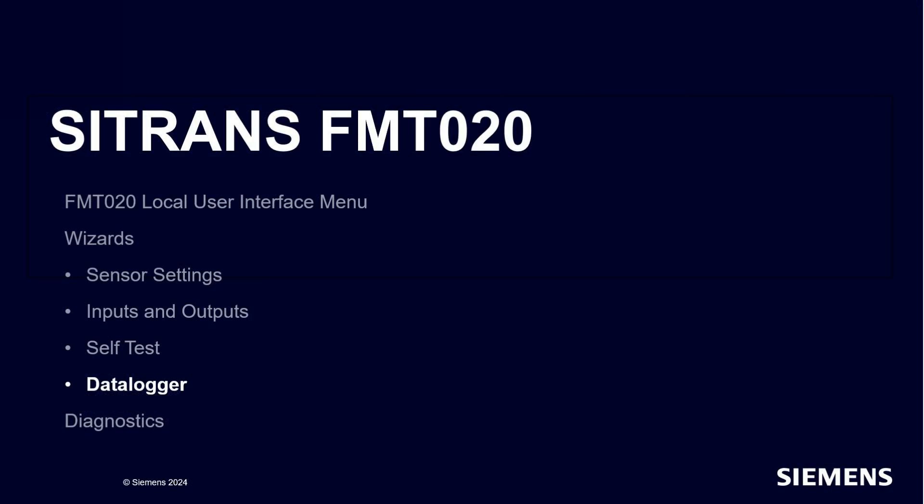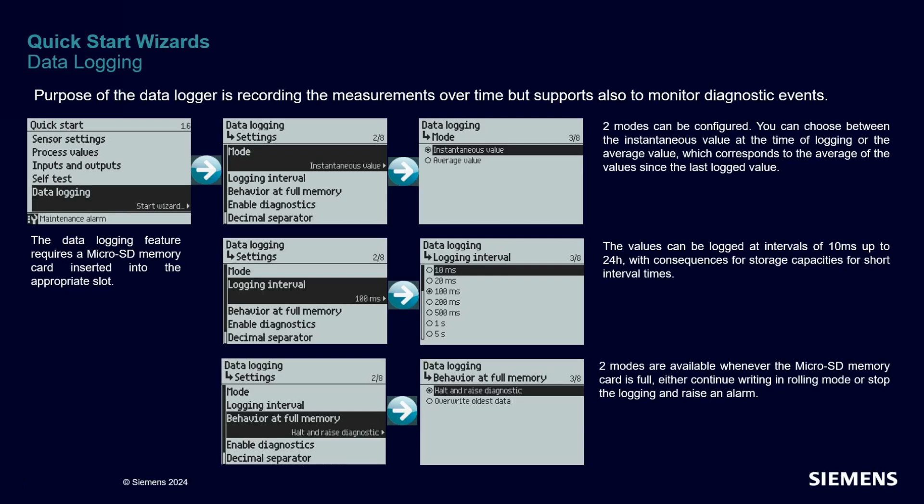The last wizard for this webinar is the data logger. In order to save your log file, the FMT-020 needs a micro SD card to be installed. If you intend to use the data logger, don't forget to purchase the SD card as an option. We provide an option for an industrial micro SD card to fulfill harsh testing conditions, but if your environment is more friendly, you can use any commercial micro SD card, as long as the capacity is 32 gigabytes or less.